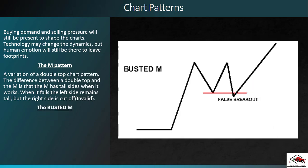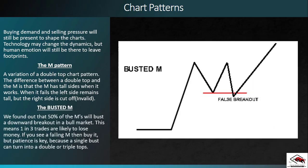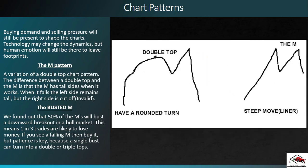Now let's talk about the busted M — basically what we call the false breakout. We found that 50% of M formations will bust a downward breakout in a bull market, meaning roughly one in three trades are likely to lose money. If you see a failing M formation you have to place buy orders, but patience is key because a single bust can turn into a double top or even a triple top. With the rise of this formation, price makes a steep move higher, often in a straight line, leading to the first peak. If instead of breaking out to the downside price first closes above the first peak, you no longer have a valid M formation.